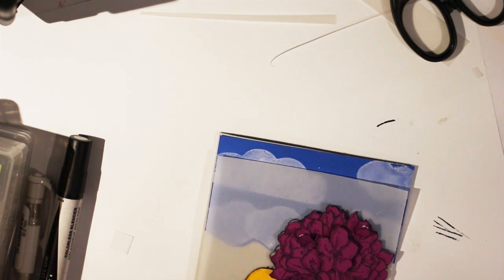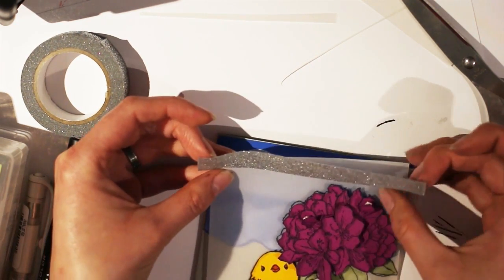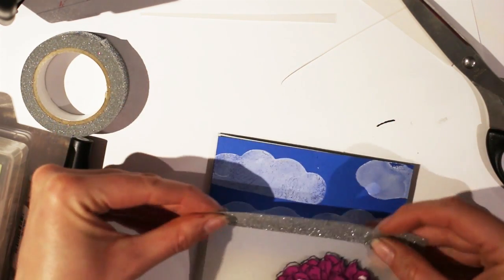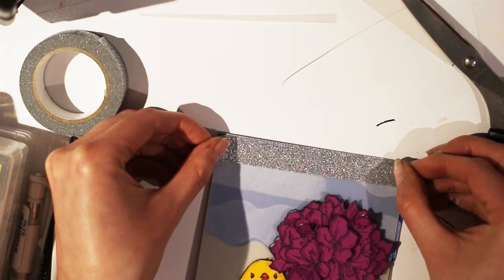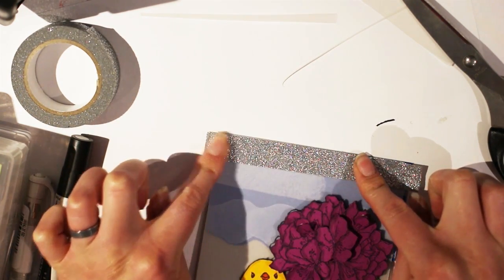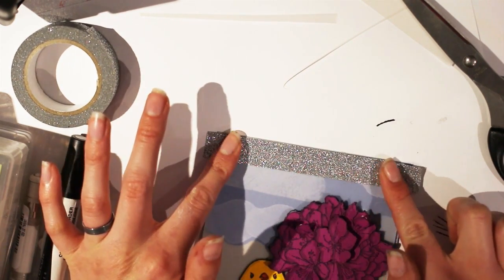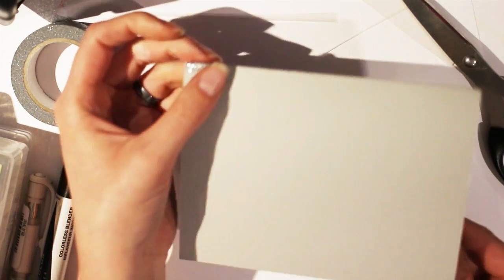Now the thing about vellum is that if you use just regular double-sided tape on it, you'll see where you've taped it. So that's why I like the idea of the sparkly tape. It adds a little something and you don't really have to worry about seeing the tape. I'm just going to pick up the end of my vellum with the tape. Press that down. Then line it up at the top. Make sure my vellum is straight. Take your time with this. Don't rush this part. Just make sure everything is lined up.